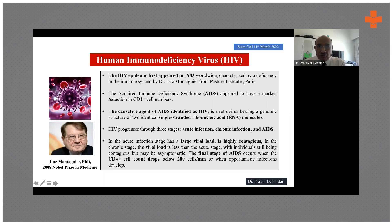HIV is also called acquired immunodeficiency syndrome, mainly because it disperses the immune cells. CD4 cells are mainly affected in this syndrome, and there is a marked reduction in CD4 cell number, which has been shown as a post-diagnostic marker in HIV patients.